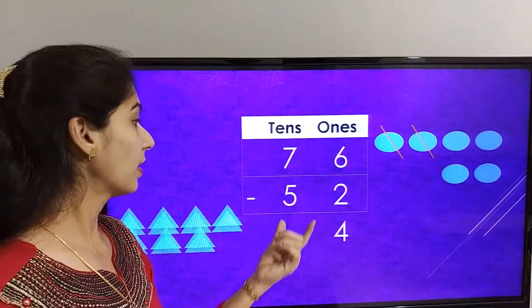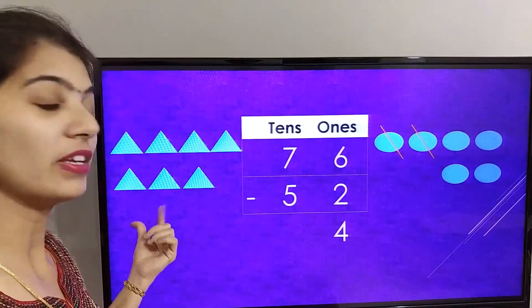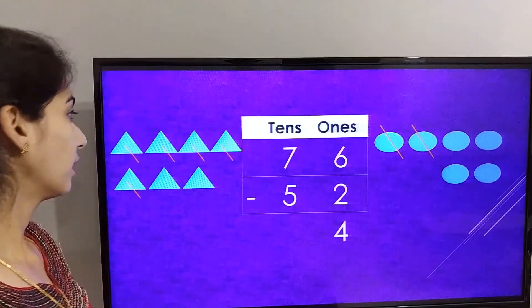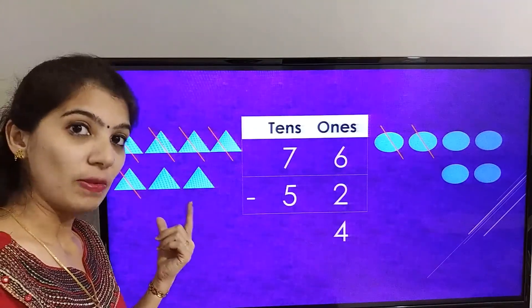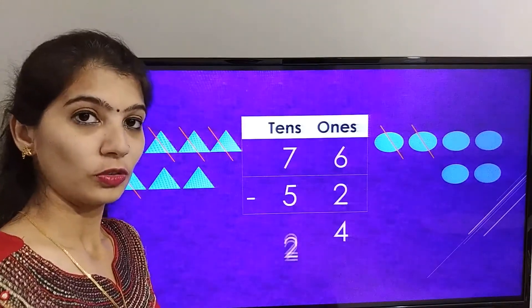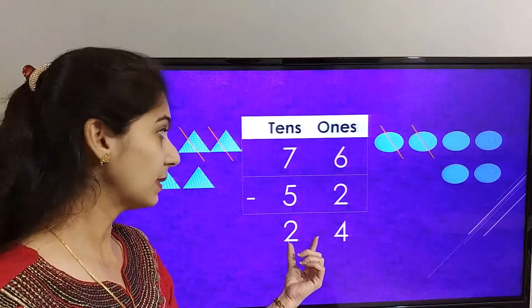The number in the tens place is 7 minus 5. Let's cut 5 triangles, so the triangles remaining are 1, 2. So the answer in the tens place is 2.